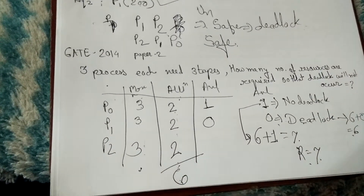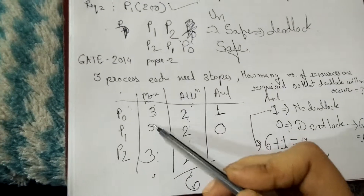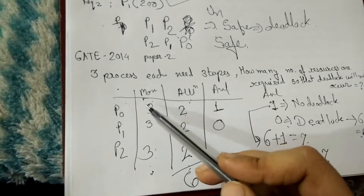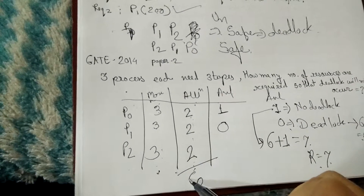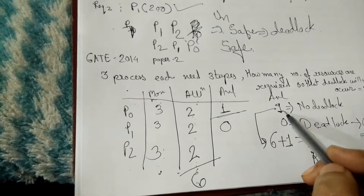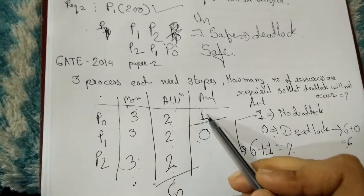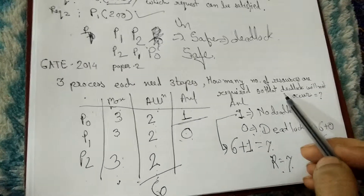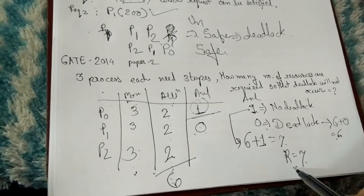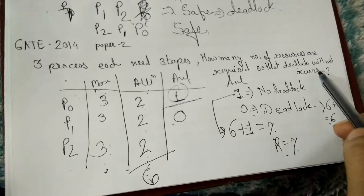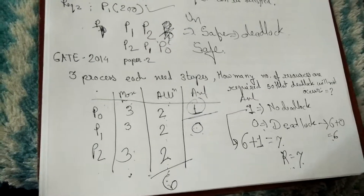To recap: with 3 processes each having maximum need 3, allocate (max minus 1) = 2 to each process, giving total allocation of 6. If available = 1, there is no deadlock; if available = 0, there is deadlock. So for no deadlock add 1 to get 7 total resources; for deadlock, add 0 to get 6 total resources.